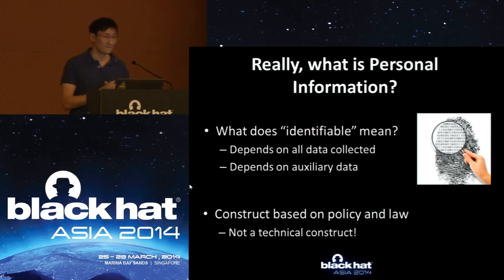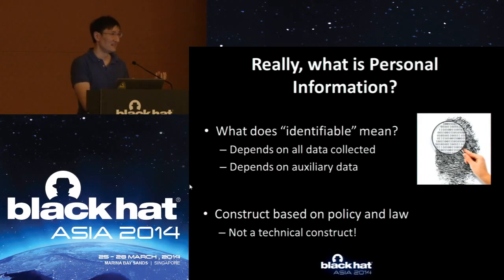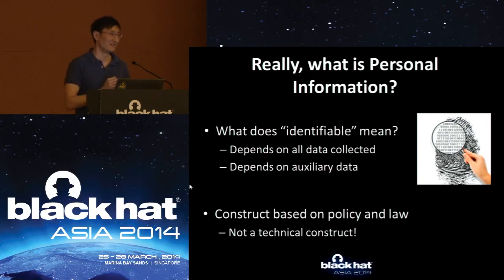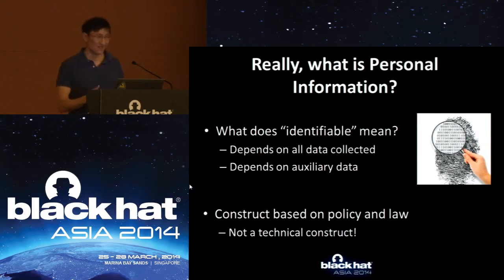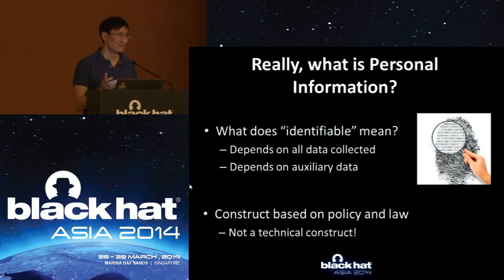Another issue is that it depends on what auxiliary data you have. You may have a name and address — that's clearly personal information. But suppose you have an identifier and some data attached to it, and that identifier is in some third-party proprietary database attached to a name and address that you don't easily have access to. Is that considered identifiable? Somebody could identify it, but you can't, at least not easily. So the argument is that the idea of personal information or PII is a construct based in policy and law — it's not a technical construct, and technically it doesn't make sense.